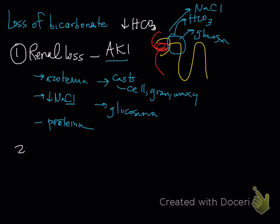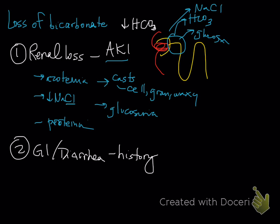Another cause is GI diarrhea. A lot of diarrhea does not cause secretional or loss metabolic acidosis, but it can, and this is more often seen in large animals. You need some sort of history; if it's a neonate of a large animal, you'd always worry about diarrhea even without history. Vomiting tends to be gastric — where you just lose hydrochloric acid — or duodenal, where you lose both. So it's mostly GI diarrhea we're talking about here.